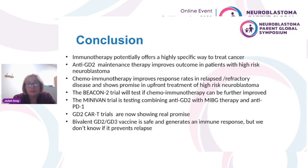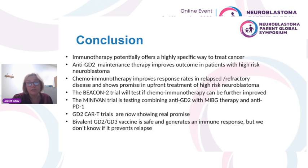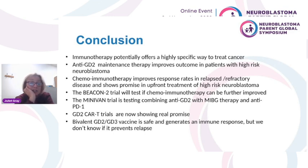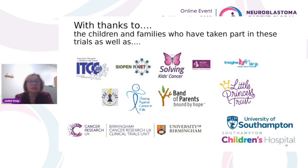In conclusion, immunotherapy offers a very specific way to treat cancer with fewer side effects than conventional treatments. Anti-GD2 maintenance therapy is now an established part of neuroblastoma treatment for high-risk disease. Giving anti-GD2 with chemotherapy has shown increasing promise. BEACON 2 in Europe will test this further and explore novel combinations. The Minivan trial tests combining anti-GD2 with MIBG therapy and anti-PD-1. CAR T cells are showing promise but remain experimental. The GD2/GD3 vaccine is safe and generates an immune response, but effectiveness remains unproven. I'd like to thank all the people who funded and supported these trials, and the children and families who took part.